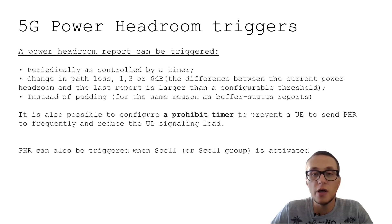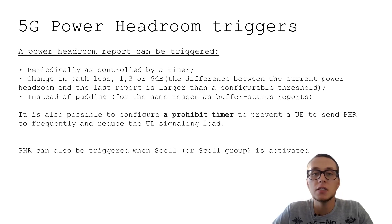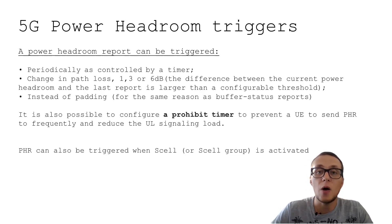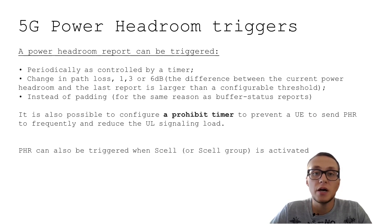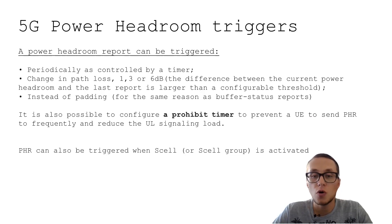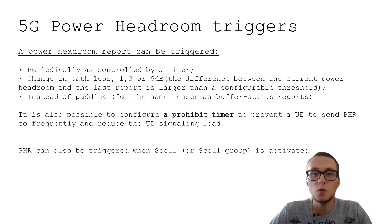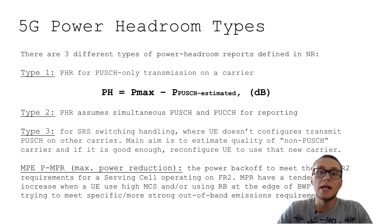By using a prohibit timer, we can reduce uplink signaling load and uplink interference. However, the negative side is that it may also negatively affect some radio resource management features, because power headroom is used in uplink carrier aggregation and can be used in some mobility features. So that timer should be configured in a very optimal way and with certain precision.